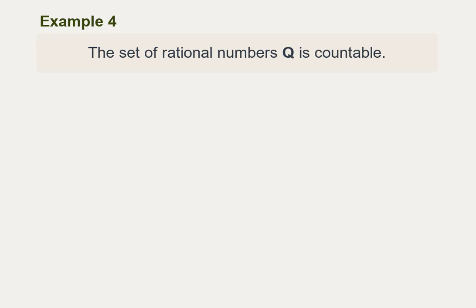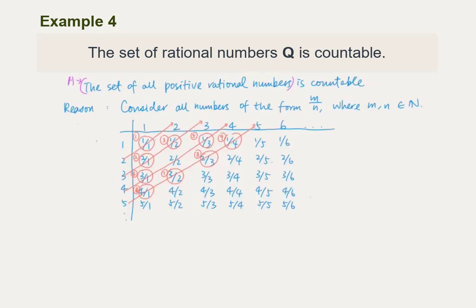Example 4. The set of rational numbers is countable. First, we want to show that the set of all positive rational numbers is countable — let us denote it by A. We can think of elements of this set as numbers representable in the form m/n, where m and n are natural numbers. Let's list all numbers of this form systematically in the following table, which is infinite in both directions. At every point in the table, we take the row number divided by the column number to give the value of m/n. Thus, every element of the form m/n where m, n are natural numbers will appear in this table.